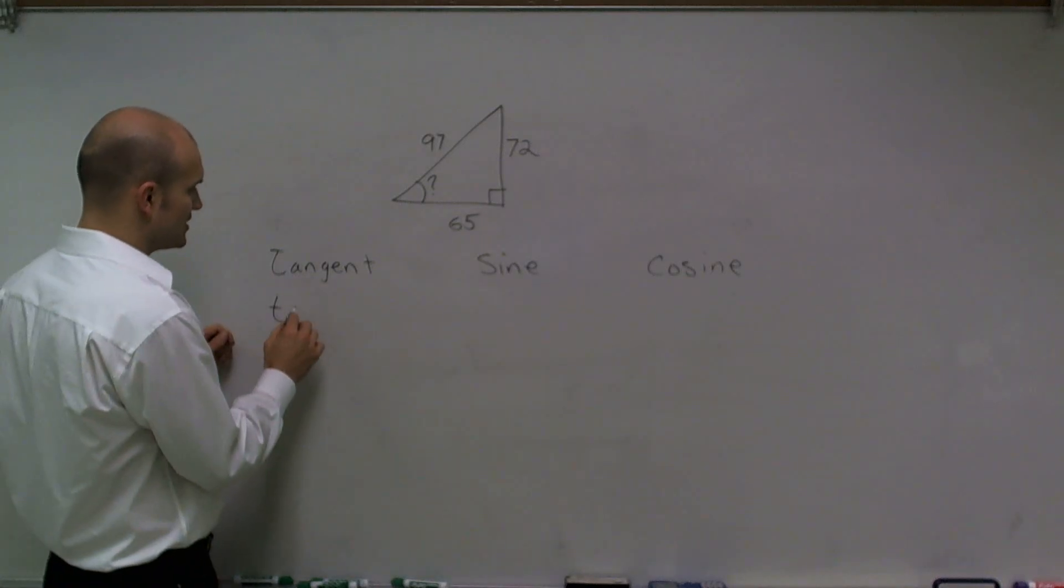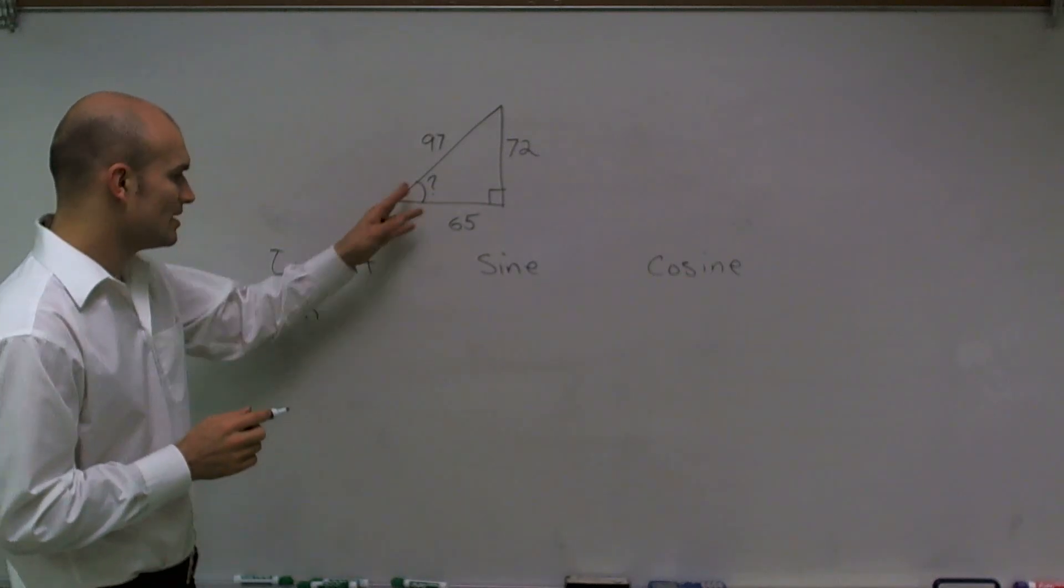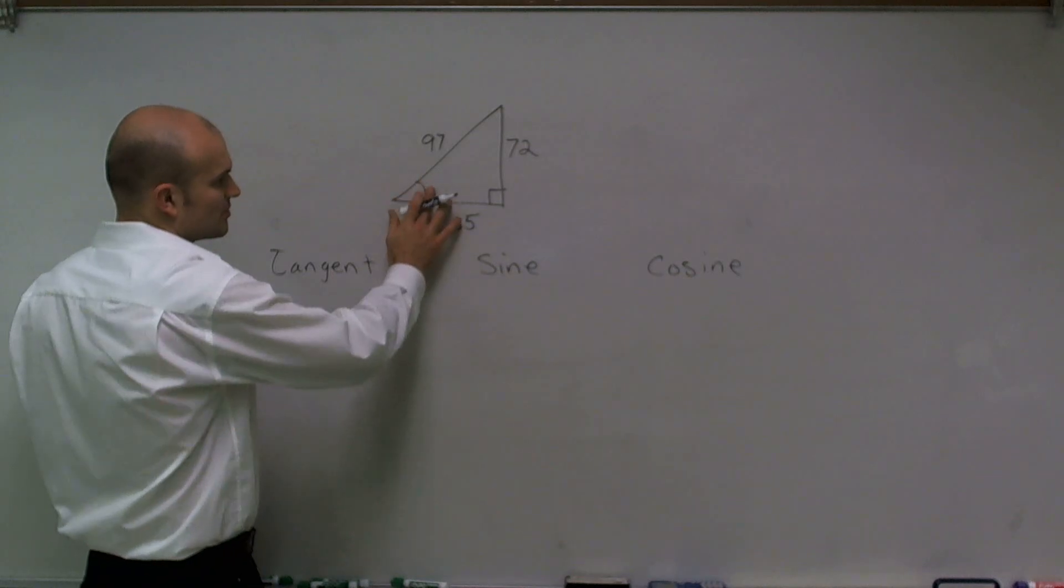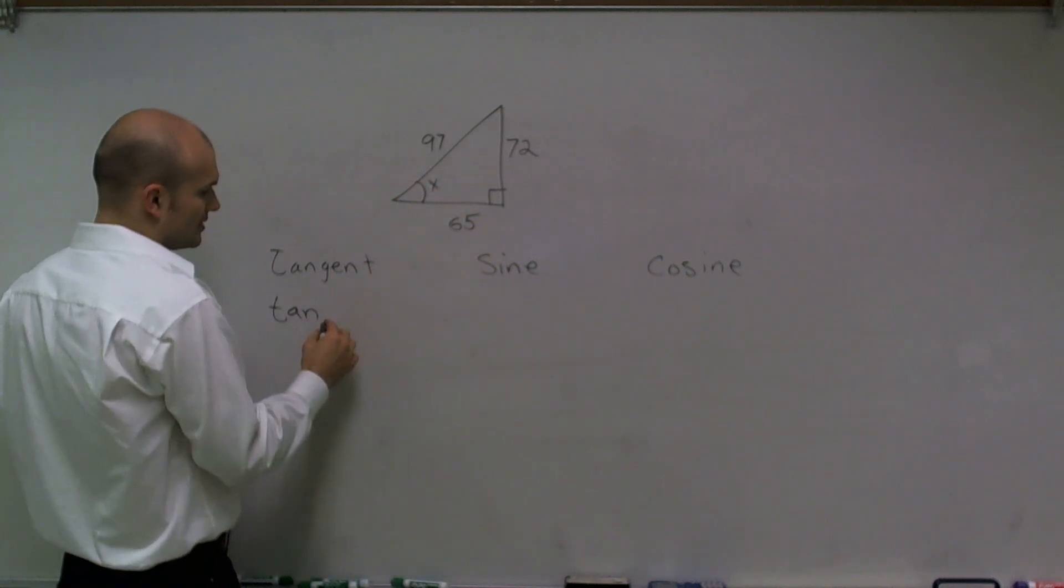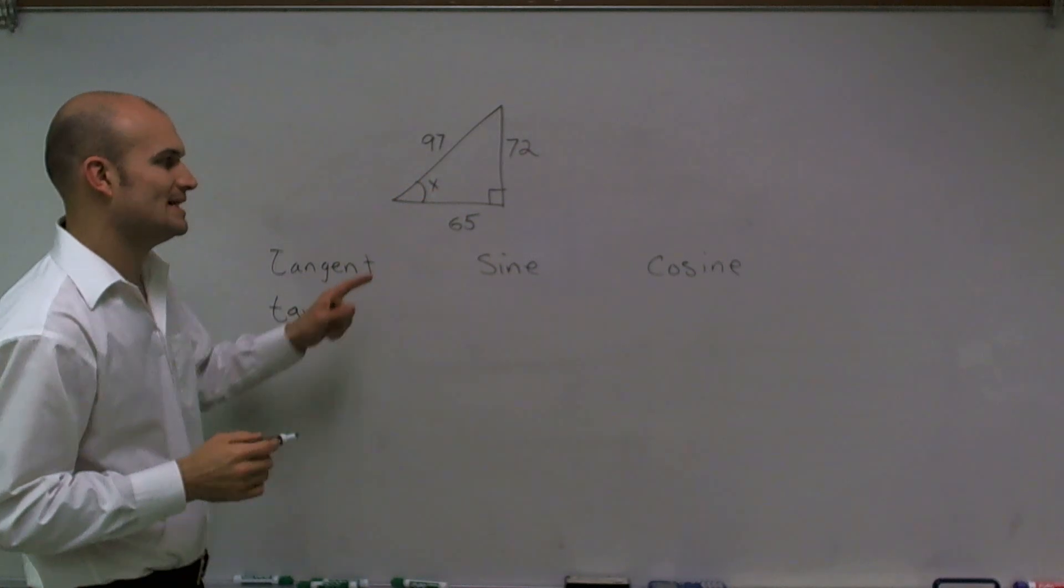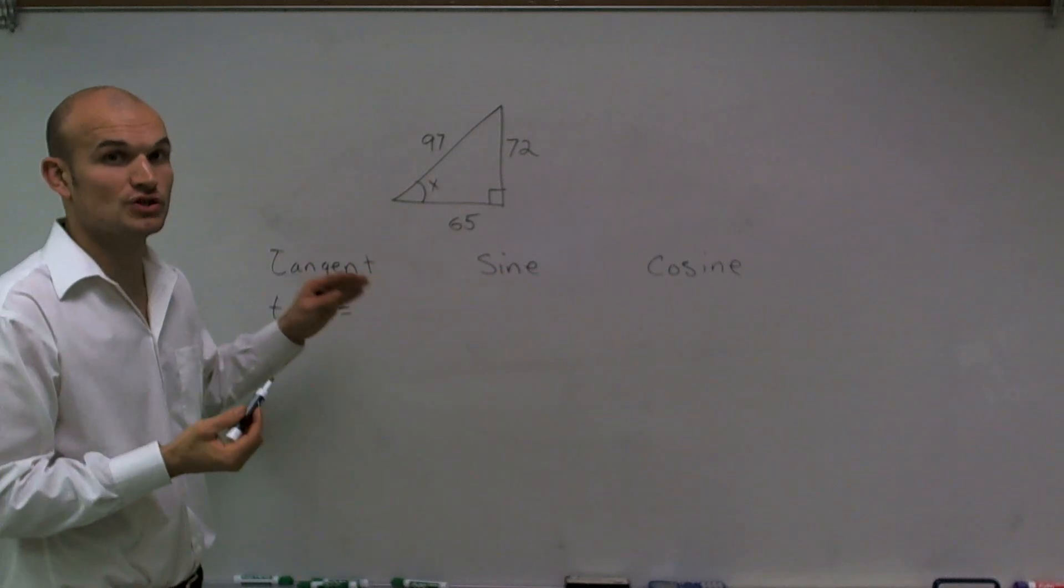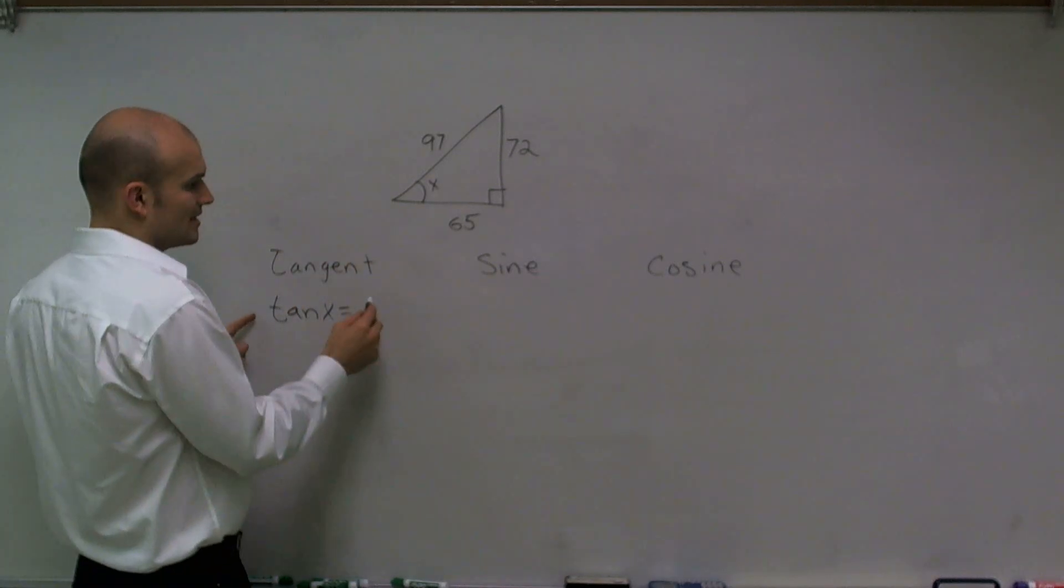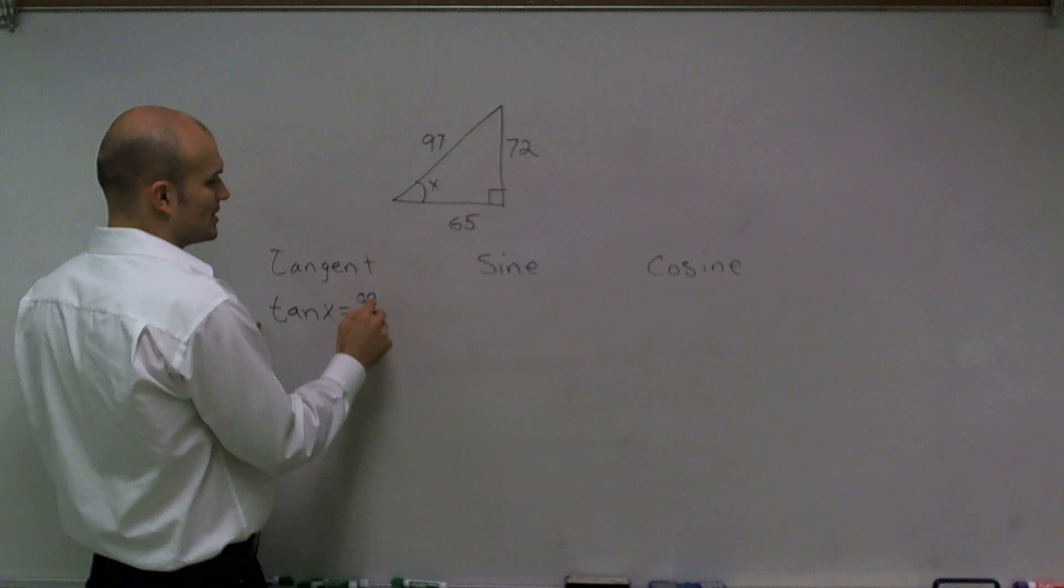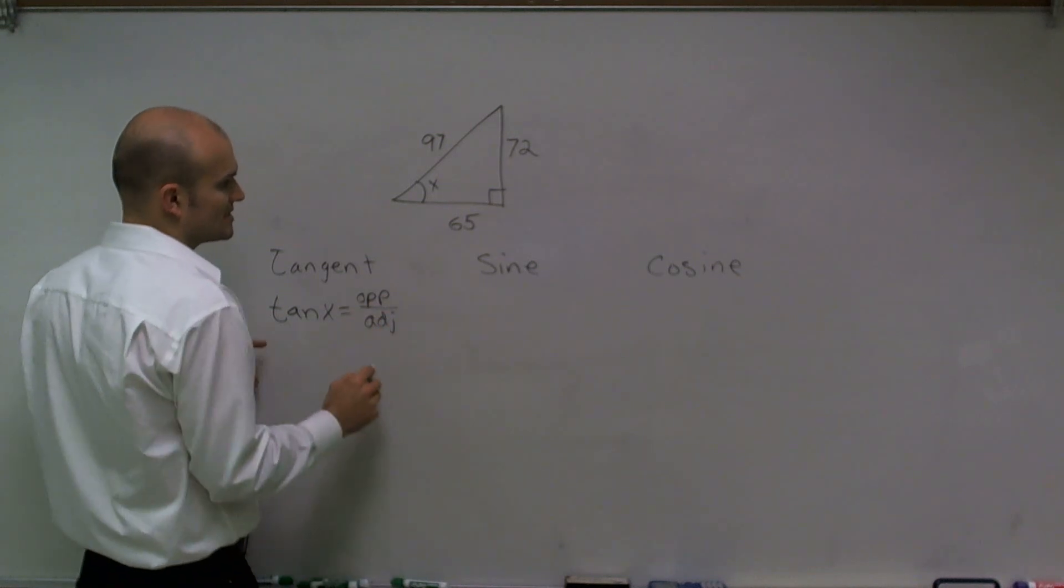The tangent, if I want to find the tangent of my angle, let's just replace this question mark with x. The tangent of x is going to equal the ratio of two side lengths of my triangle, and the two side lengths for tangent is your opposite over your adjacent.